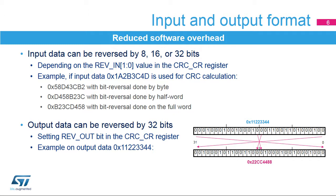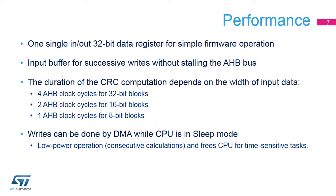For example, output data 0x11223344 is converted into 0x22cc4488. The CRC data register includes an output buffer which allows for immediate writes by the CPU or DMA peripheral of a second data word without waiting for any wait states due to an active CRC computation. The CRC data register can be accessed by word, right-aligned half-word, and right-aligned byte.